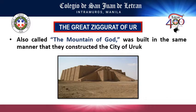The Great Ziggurat of Ur was built in the same way as Uruk City was constructed. It is also known as the Mountain of God and can be compared to the churches we have today.